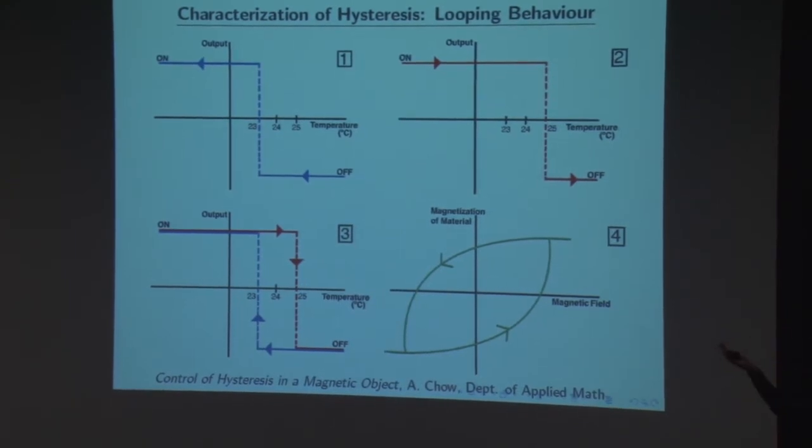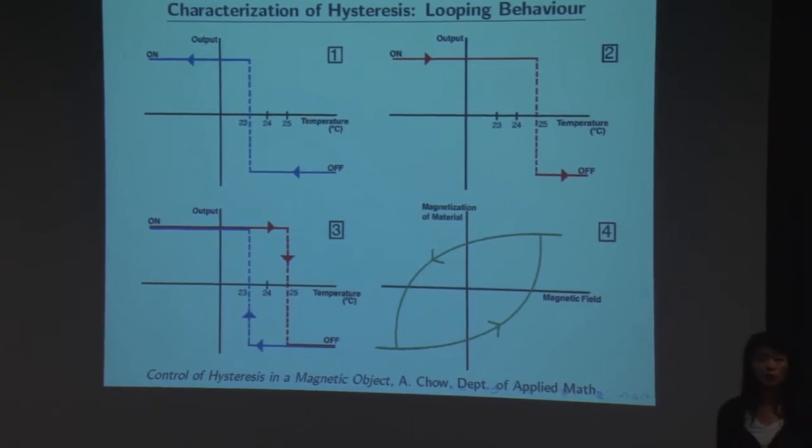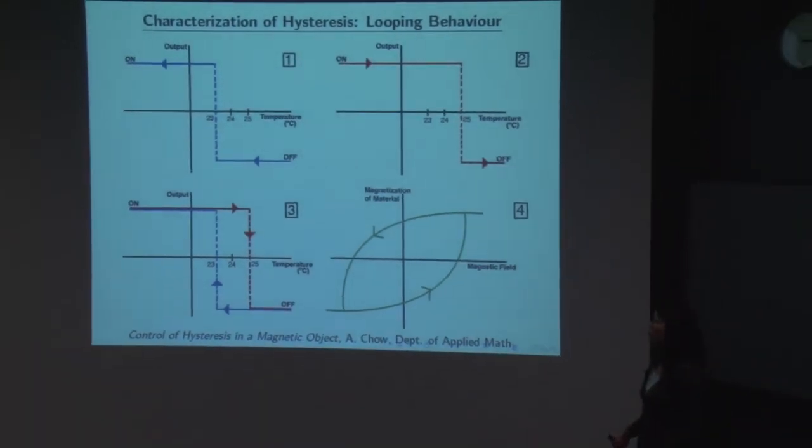And if these two dynamics are combined, then they form a loop, as illustrated in the third diagram. This loop is formed because the path from off to on is different from the path from on to off.